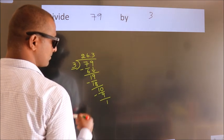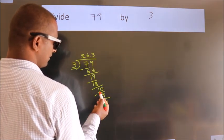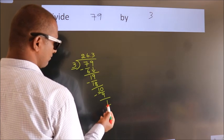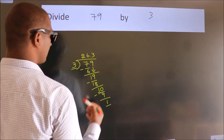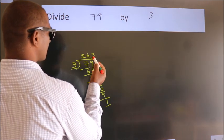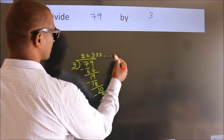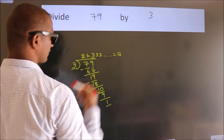Now you observe, we had 1 here. And we got 1 again. That means, this number keep on repeating. So this is our quotient.